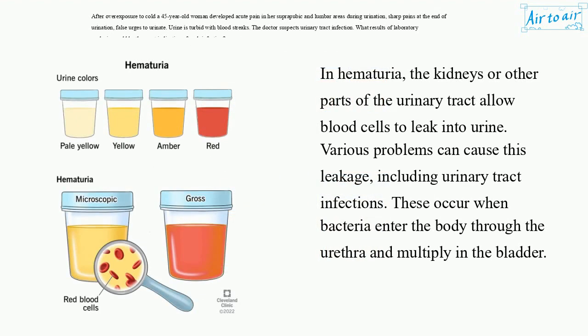In hematuria, the kidneys or other parts of the urinary tract allow blood cells to leak into urine. Various problems can cause this leakage, including urinary tract infections. These occur when bacteria enter the body through the urethra and multiply in the bladder.